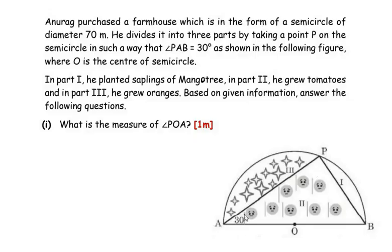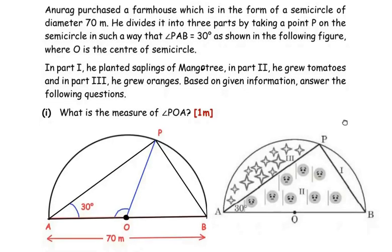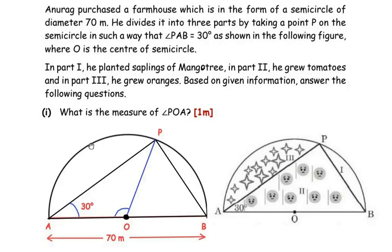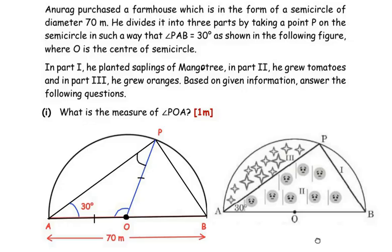We need to find angle POA. Drawing the equivalent figure: we have the semicircle, AB is the diameter of length 70 meters, and angle A is 30 degrees. We join line OP and consider triangle POA. In this triangle, OA equals OP because both are radii of the same circle, so triangle POA is an isosceles triangle.